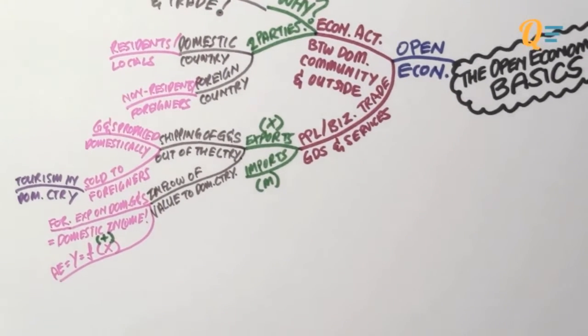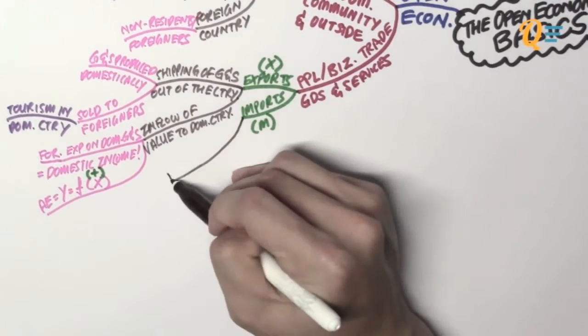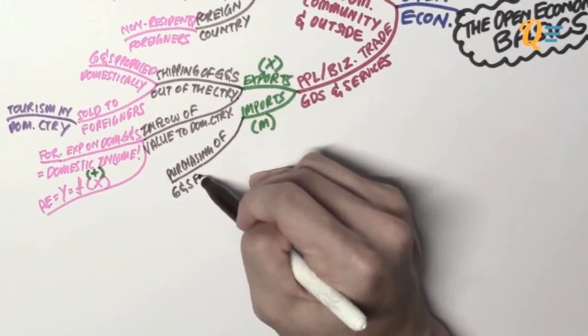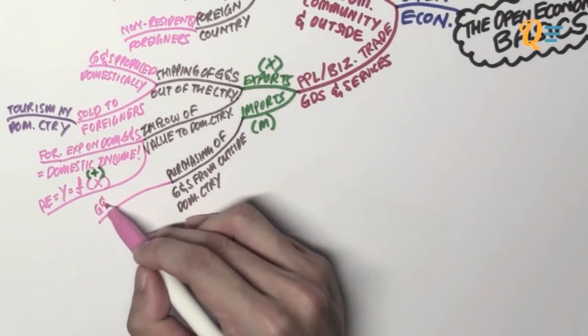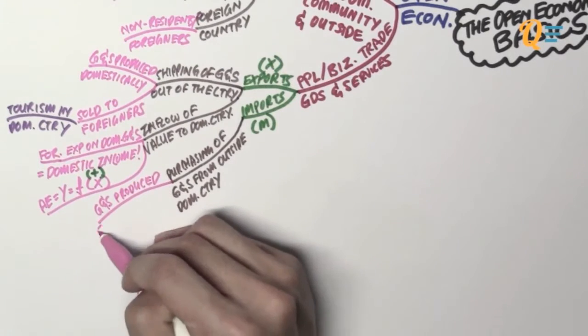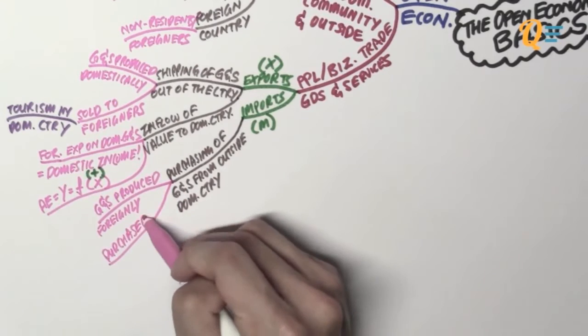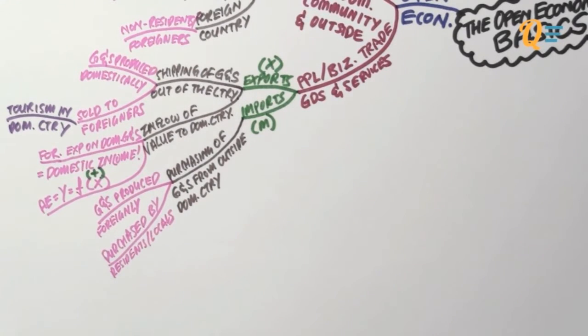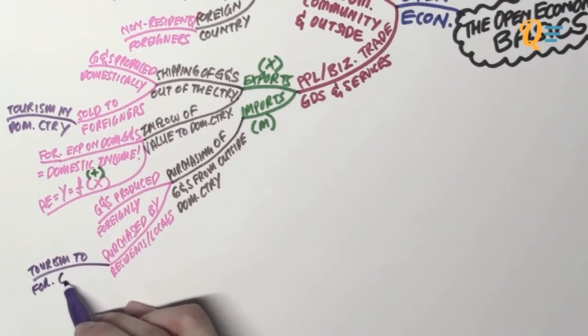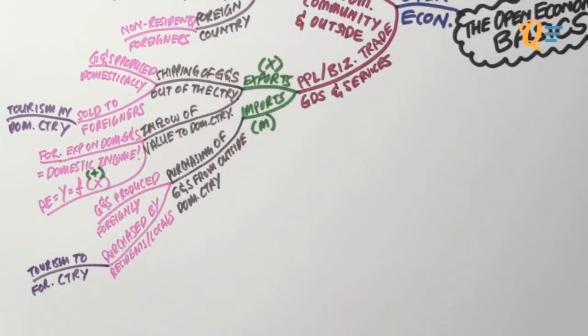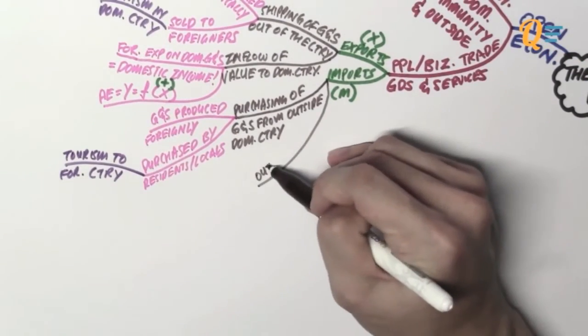So understanding this, let's move on to imports. What are imports? So imports refer to the purchasing of goods and services from outside of the domestic country. So these are goods and services that are produced foreignly and are purchased by residents or locals, people of the home country. Imports also refer to domestic tourism to foreign countries. Whenever a resident or local person goes overseas to buy certain goods and services, that is considered as an import.